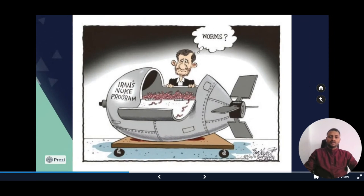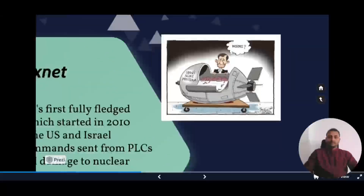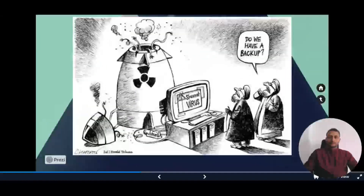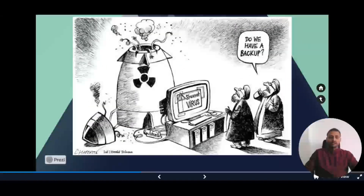A satirical cartoon was created at the time showing the nuclear centrifuges full of worms. Iranian officials were also reportedly checking whether they had a backup for the compromised systems.